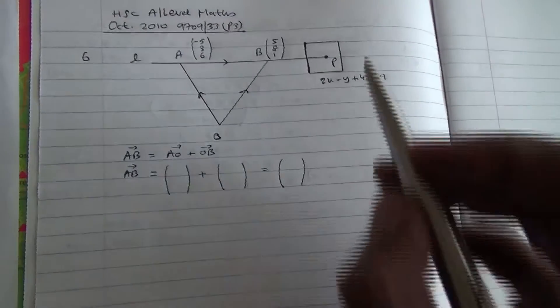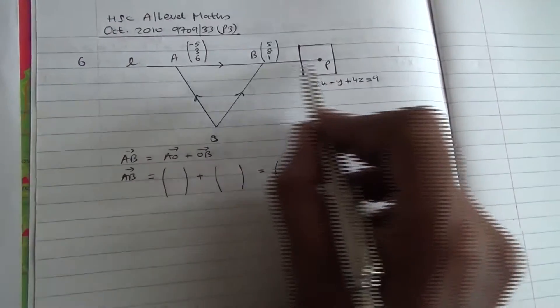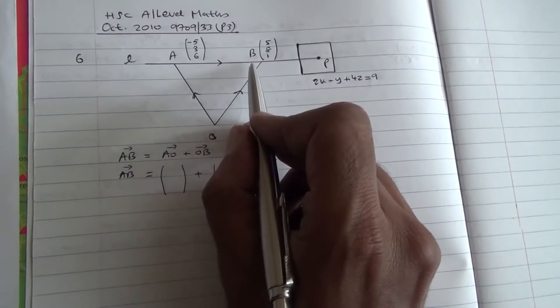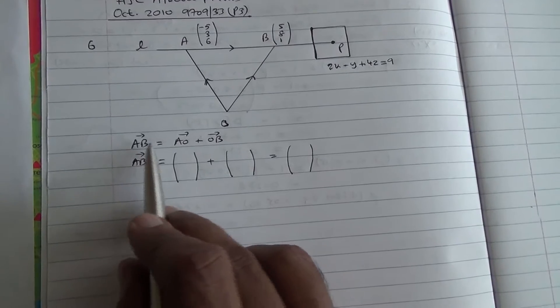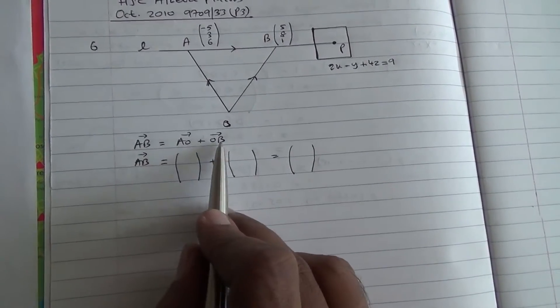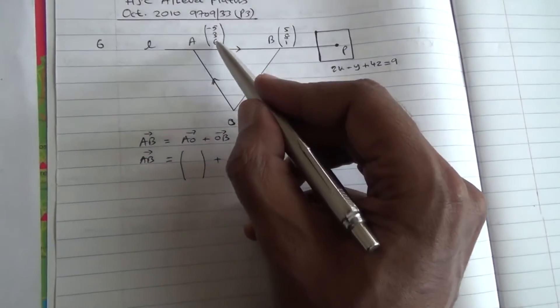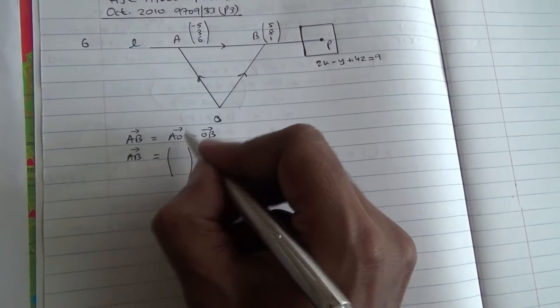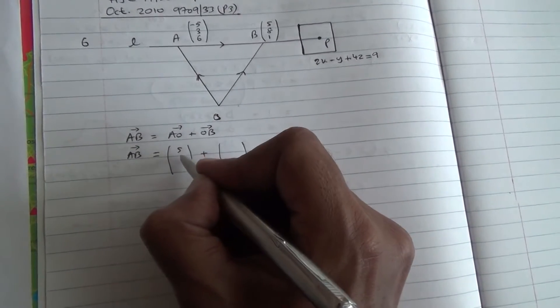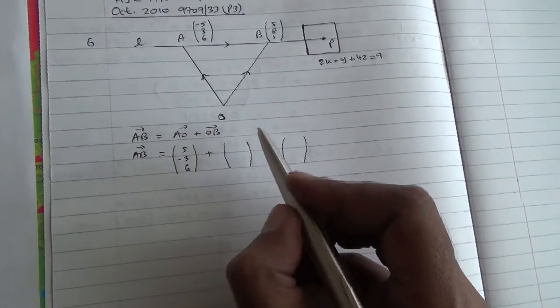Now, if we need to find the point of intersection, we need to get the equation of this line. To be able to get the equation of this line, we're going to find the vector AB first. We know by geometry that AB = AO + OB. And what is AO? We have OA (-5, 3, 6). Therefore, AO, it's going to be the negative of that: (5, -3, -6).